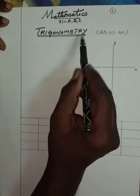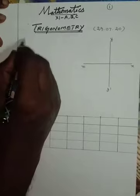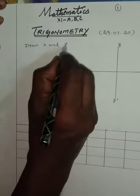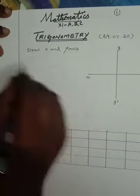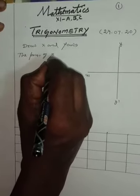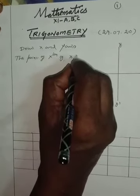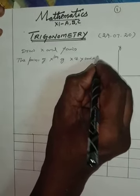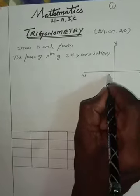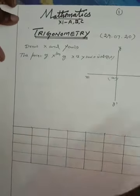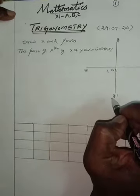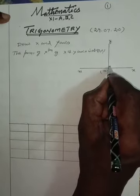Today's topic is Trigonometry. From the X and Y axes, the point of intersection of the X and Y axes is at (0, 0). The X axis and Y axis are perpendicular to each other, so this angle is 90 degrees.